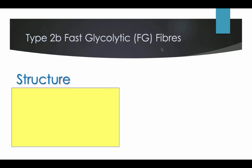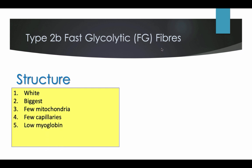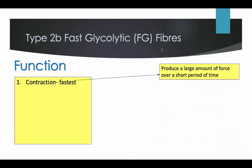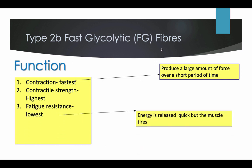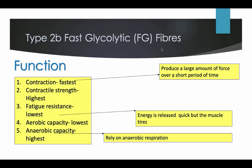Type 2B fast glycolic fibres, also known as FG. They are white and the biggest fibres. They have few mitochondria, few capillaries, low myoglobin, high glycogen, and high stores of phosphocreatine. Their functions: they have a fast contraction and produce a large amount of force over a short period of time. They have the highest contractile strength and the lowest fatigue resistance, as energy is used up quickly and the muscle tires. Their aerobic capacity is the lowest and their anaerobic capacity is the highest.